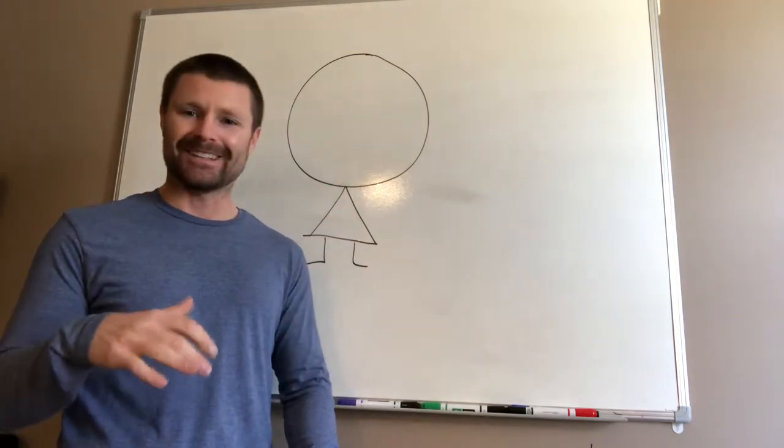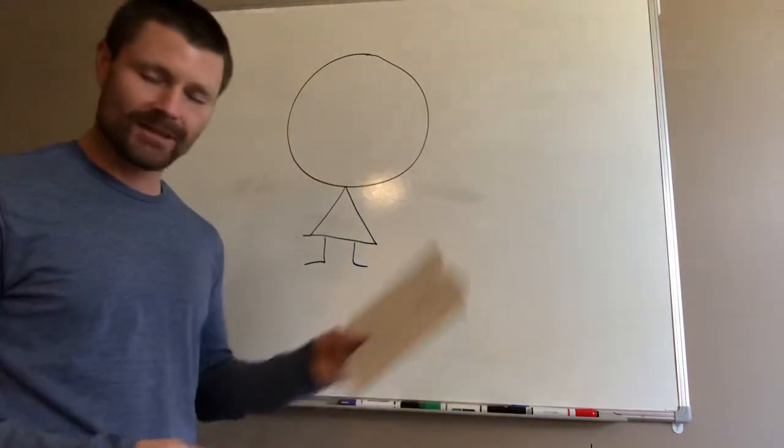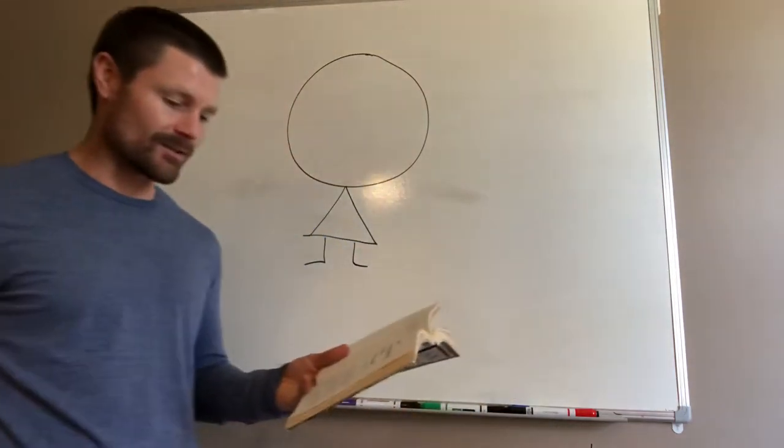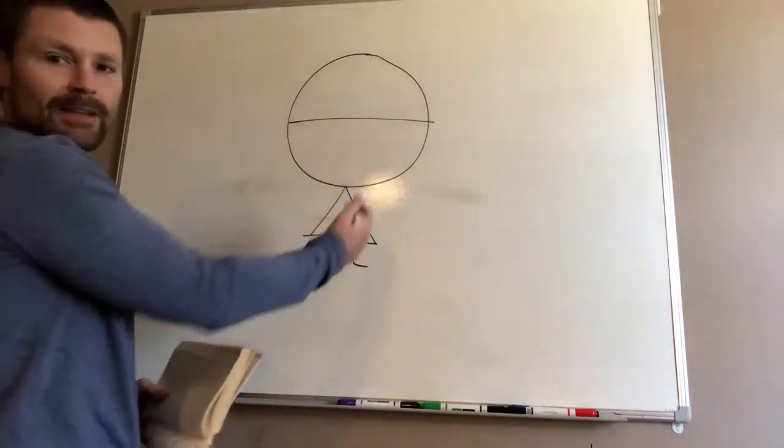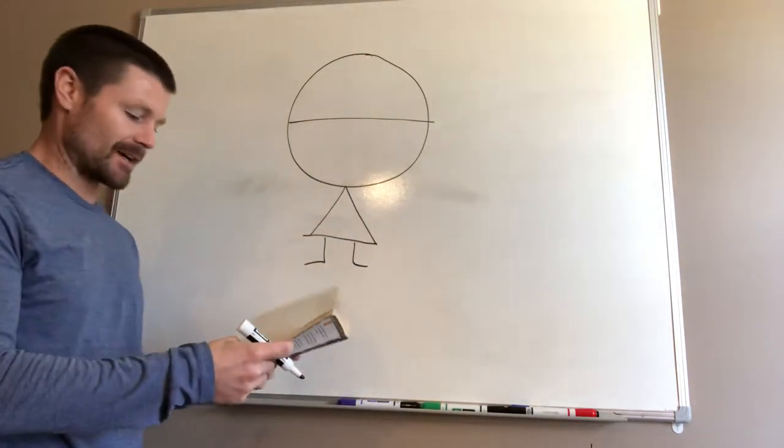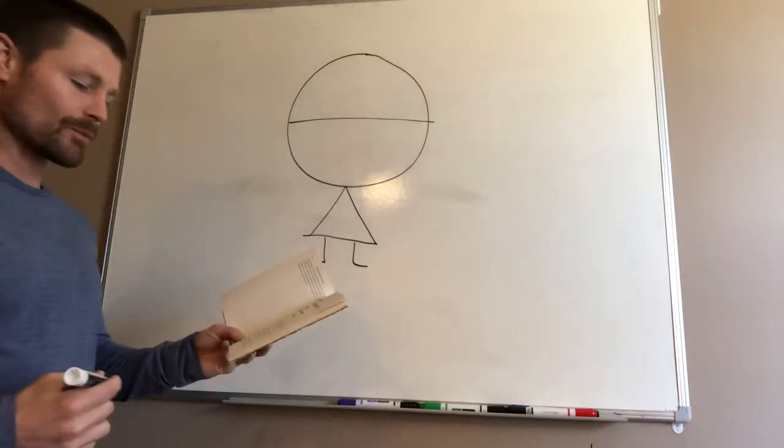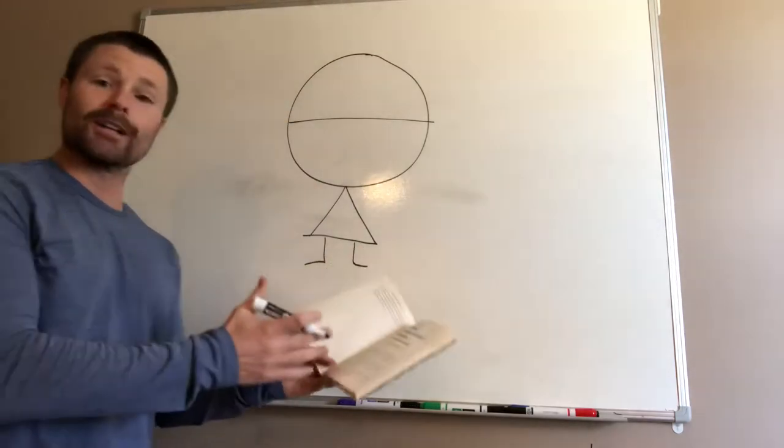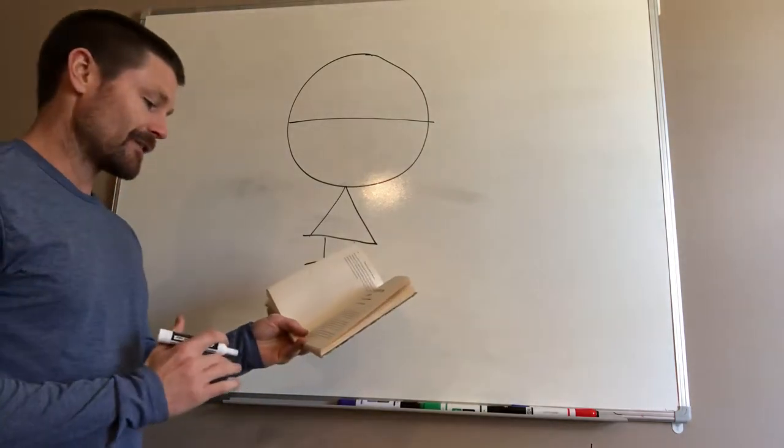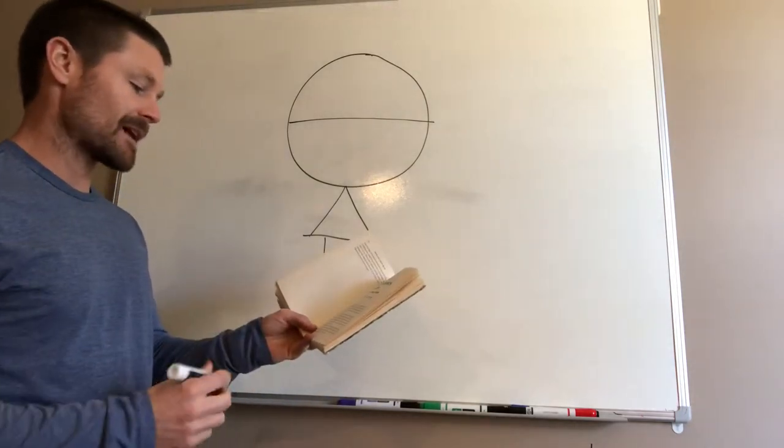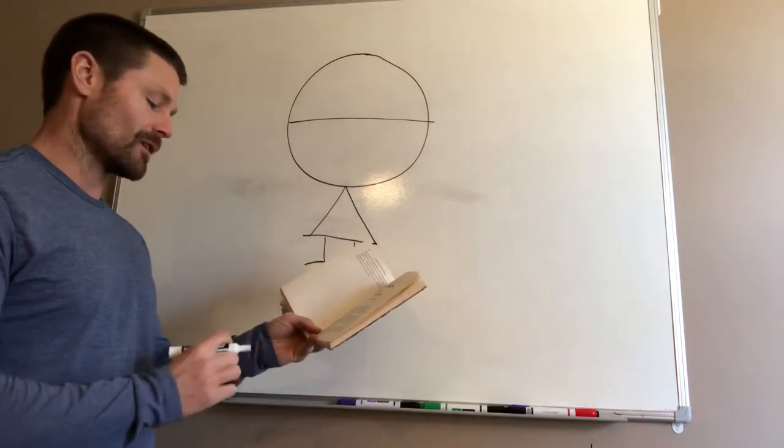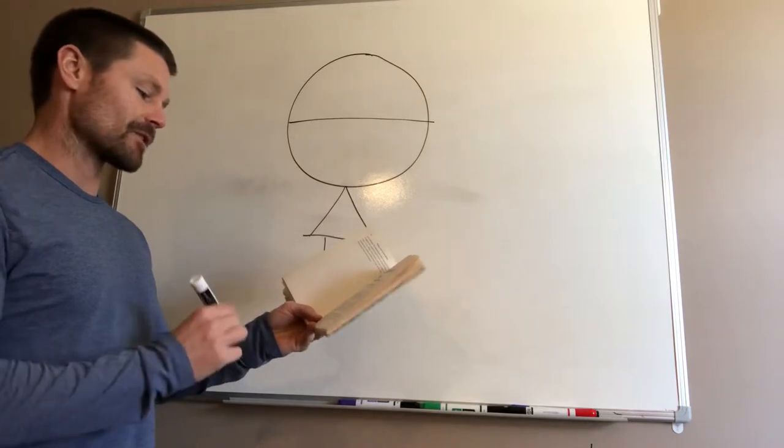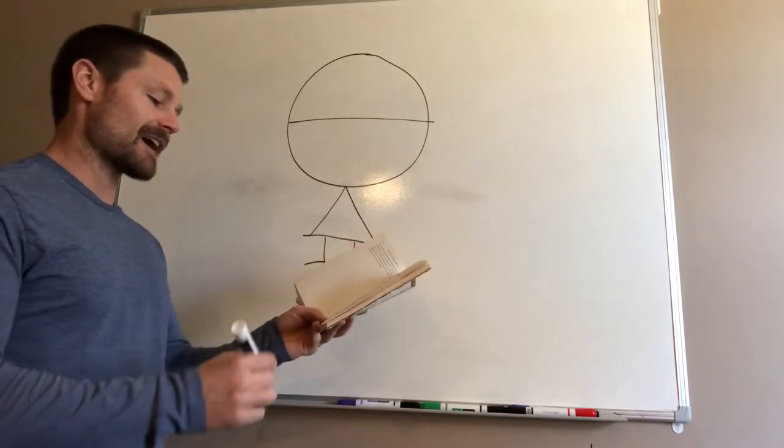Let's look at the chapter on the subconscious mind. I want to read a couple things to you. We've got our stick person here. This is our conscious mind, this is our subconscious mind. He says our subconscious mind receives and files sense impressions or thoughts, regardless of their nature. You may voluntarily plant in your subconscious mind any plan, thought, or purpose which you desire to translate into its physical equivalent. The subconscious mind acts first on the dominating desires that have been mixed with emotional feelings such as faith.